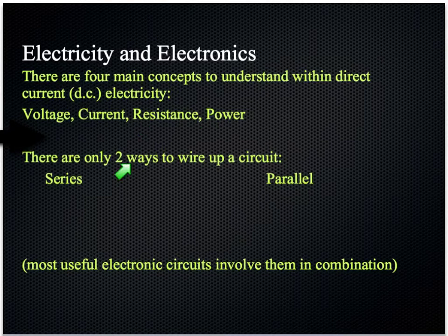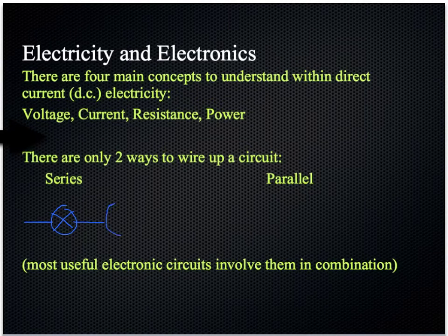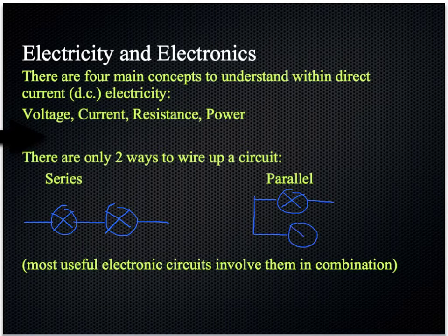There are two ways to wire up a circuit and that is series or parallel. Most useful electronic circuits involve combinations of both of these two types. Series is when you have components next to each other. For example, here we have the symbol for a bulb and next to it we have another bulb. These two bulbs are said to be connected in series. Contrasting that with parallel, we have to always have more wire to connect bulbs or any components into parallel. So here are two bulbs connected in parallel.